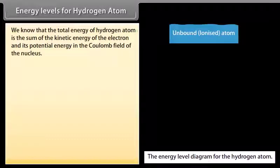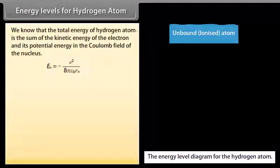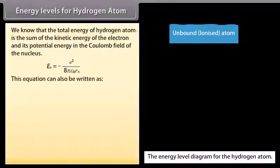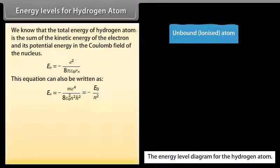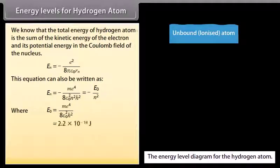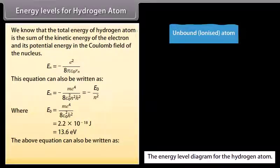The total energy of the hydrogen atom is the sum of the kinetic energy of the electron and its potential energy in the Coulomb field of the nucleus: Eₙ = −e²/(8πε₀rₙ). This can also be written as Eₙ = −me⁴/(8ε₀²n²h²), where E₀ = me⁴/(8ε₀²h²) = 2.2 × 10⁻¹⁸ joules = 13.6 eV. Therefore Eₙ = −13.6/n² eV.